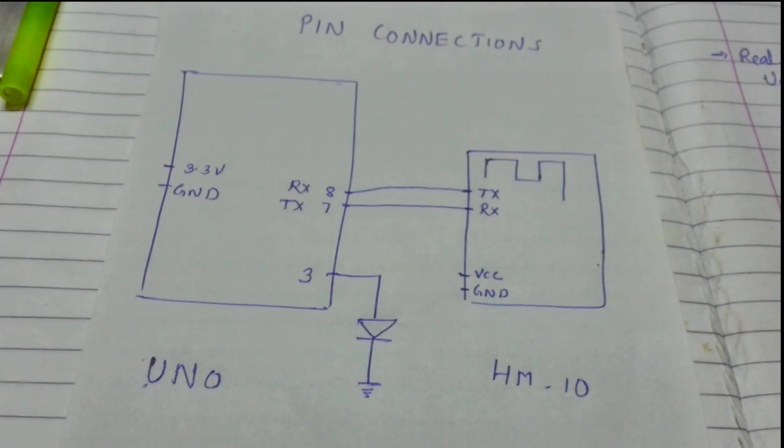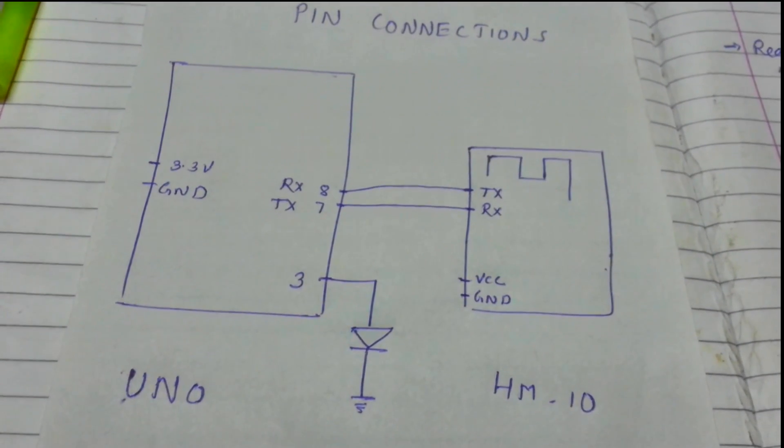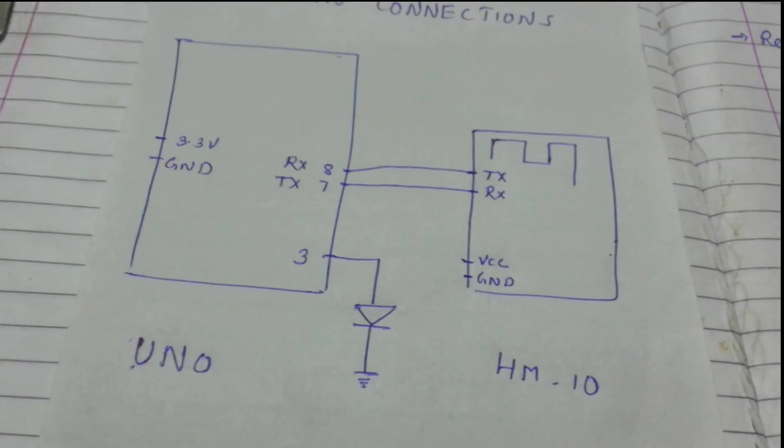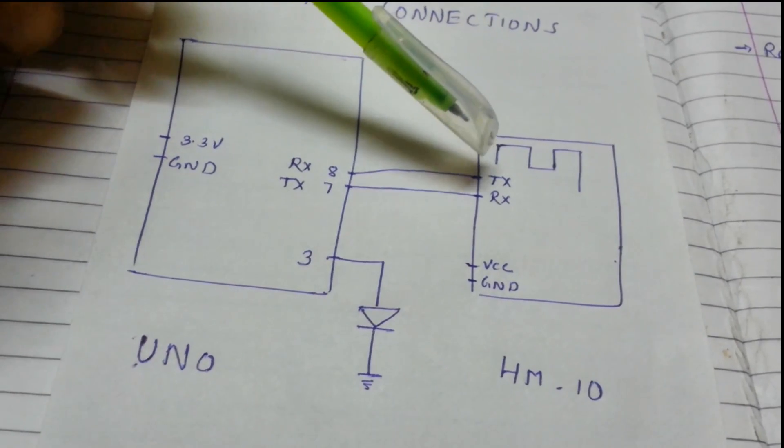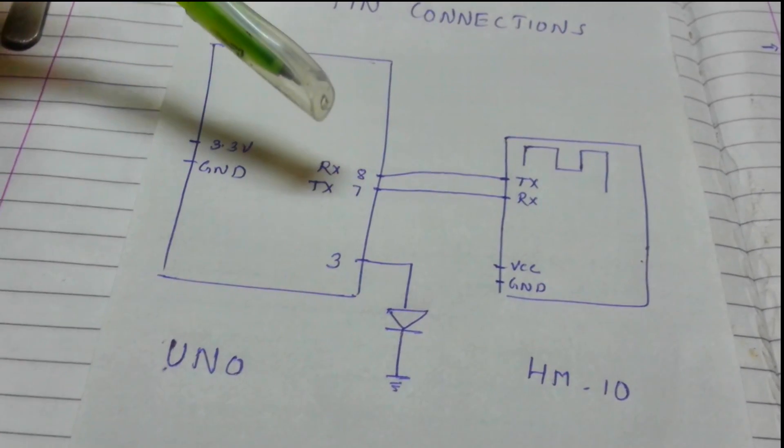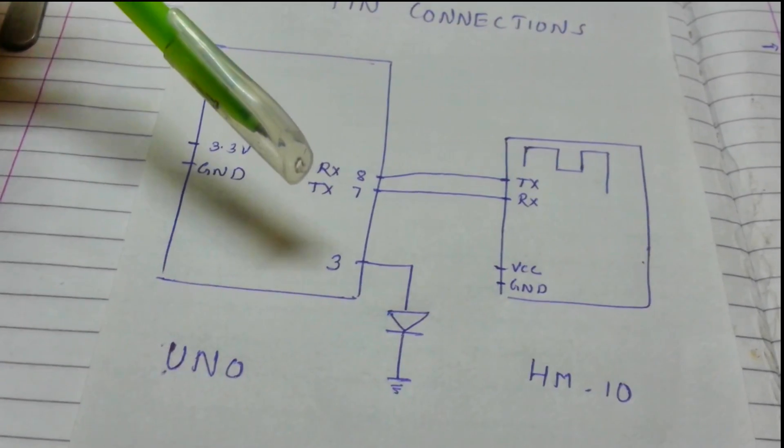Hello guys, this is step 1 for the Arduino to HM-10 connection. As we can see, the TX pin of the HM-10 module goes to the RX pin, and the TX pin from the UNO goes to the RX pin of the HM-10 module.